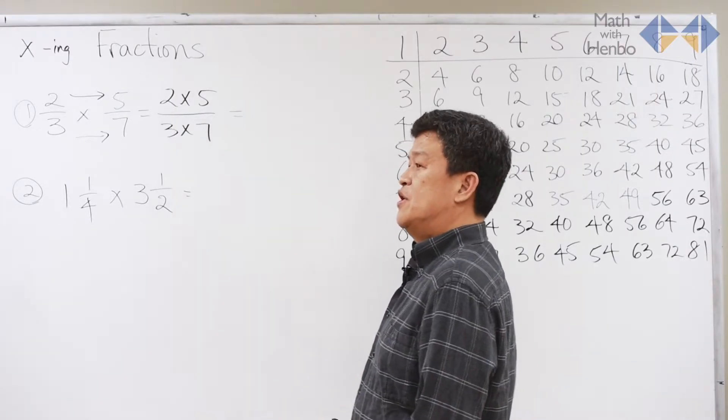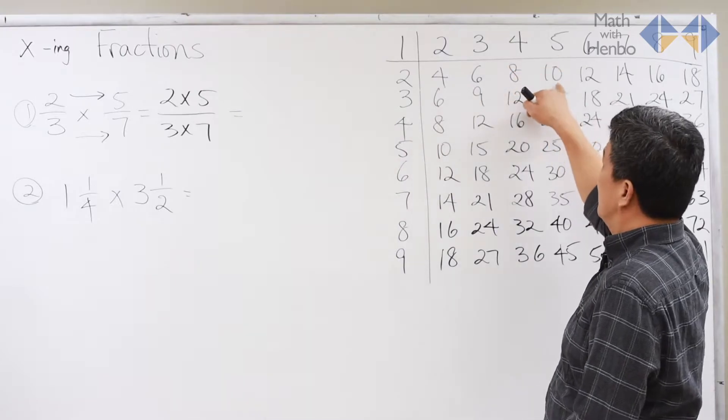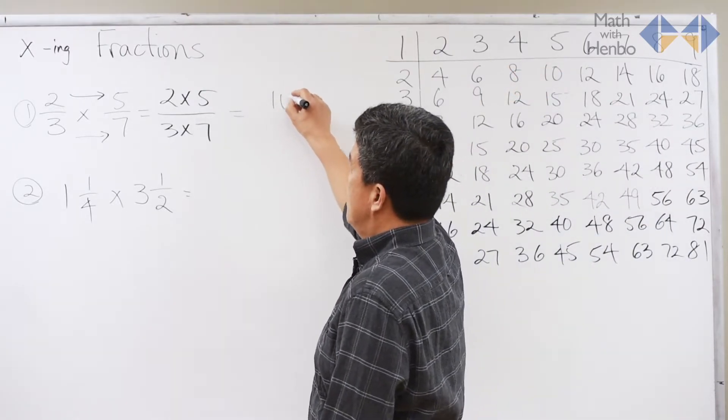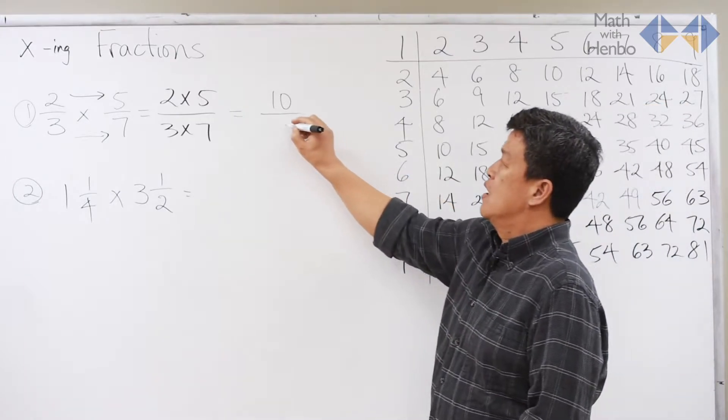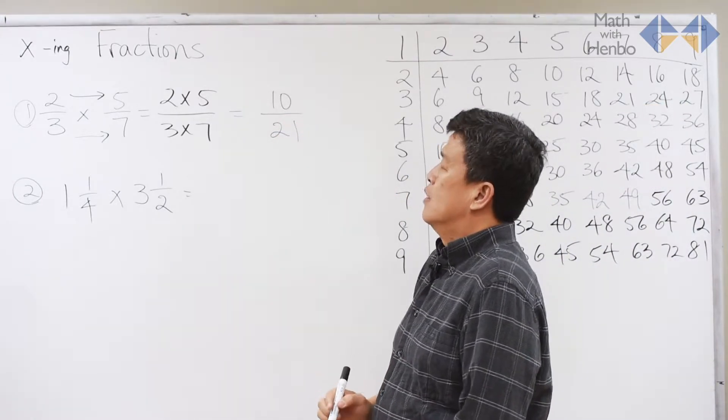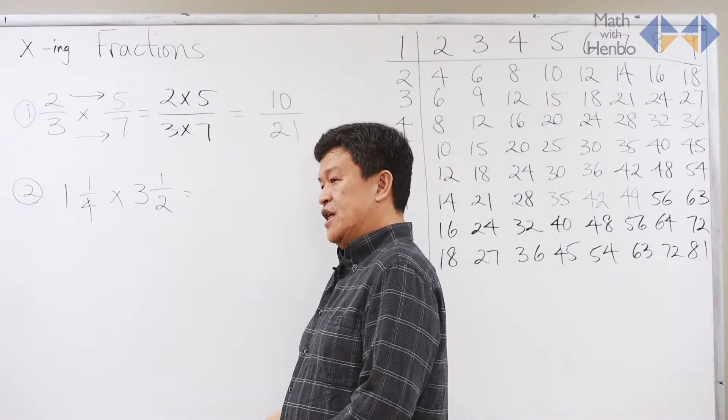And now, just simply do the multiplication. 2 times 5 gives us 10, and 3 times 7 gives us 21. 10 over 21 is essentially the answer.